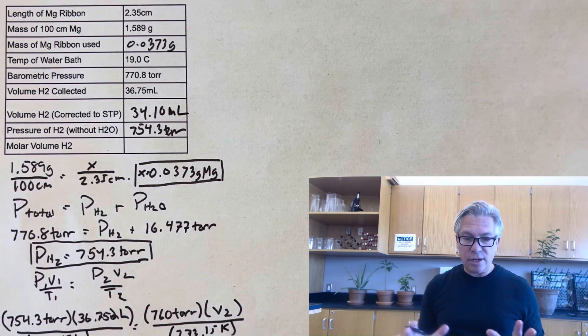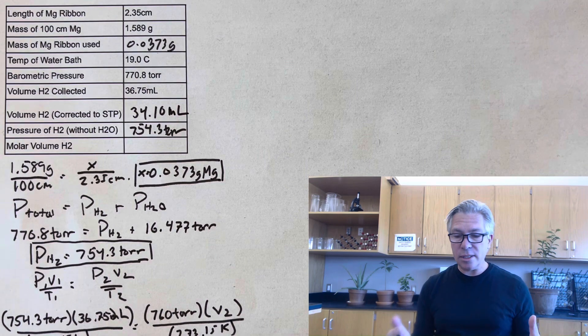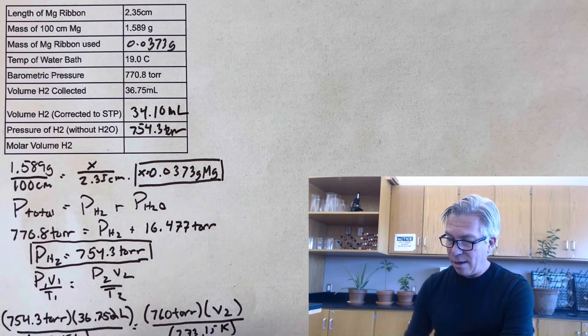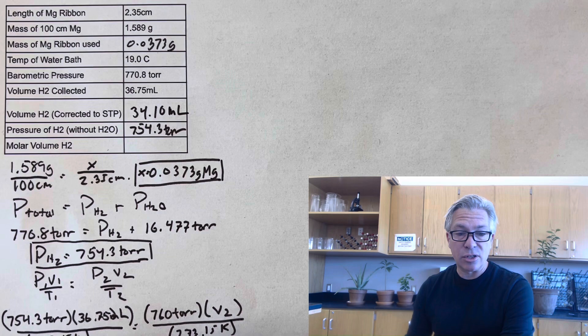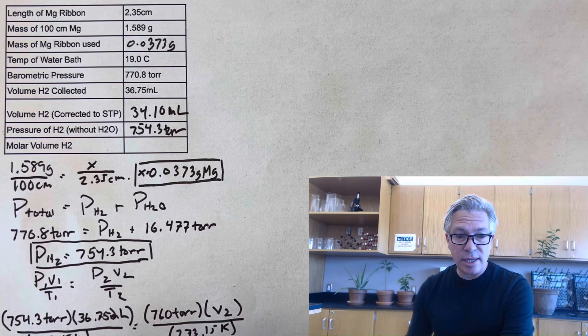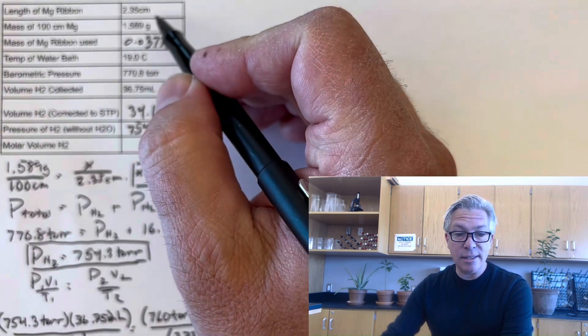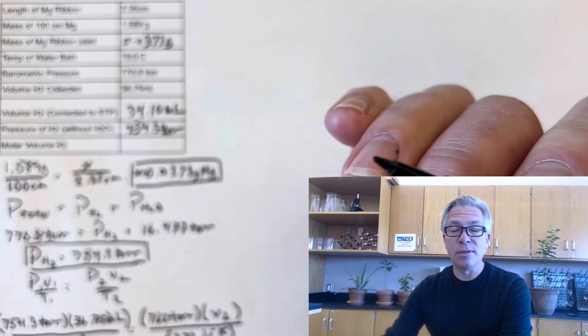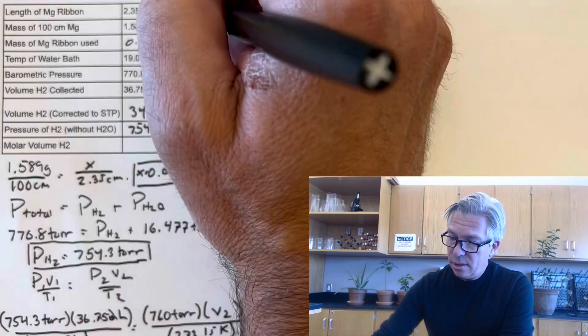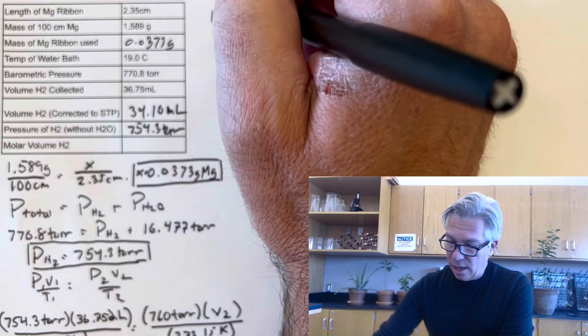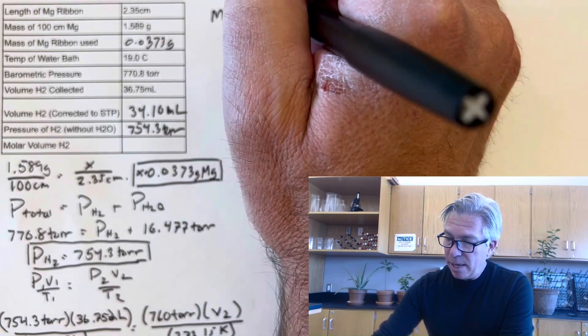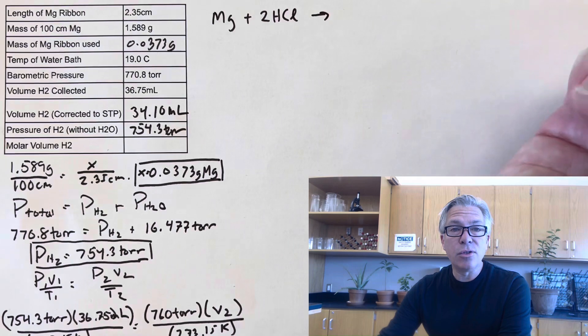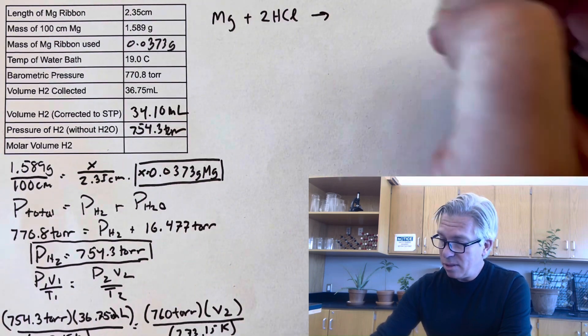All right. And we're getting close. We just have a couple more steps. One step would be to figure out, well, how many moles of hydrogen were actually in there? We didn't measure that directly, but we did measure the mass of magnesium. And so we have to do some fun little stoichiometry to find the moles of hydrogen. We refer back to the original equation. Whenever you do stoichiometry, you have to have a balanced chemical equation.